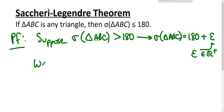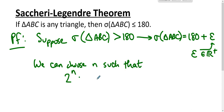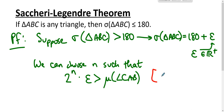We like to think of epsilon as a teeny tiny positive number. We can choose n such that 2ⁿ times epsilon is greater than the measure of angle CAB. This follows from the Archimedean property of the real numbers: epsilon is tiny, but you can double it and double it and double it until you can make it as big as you like — specifically, bigger than the measure of angle CAB.